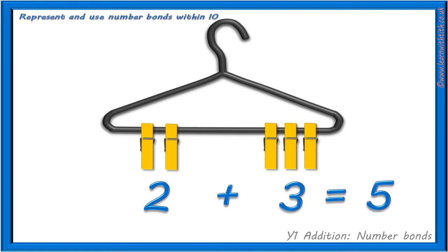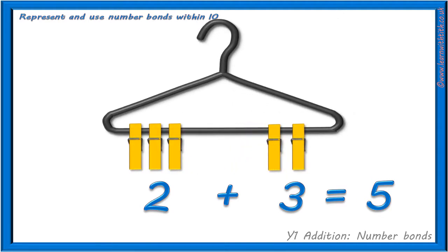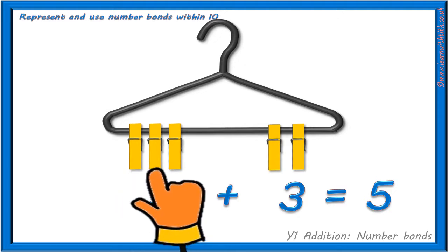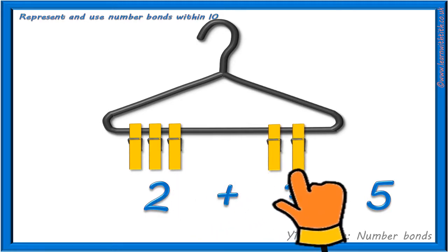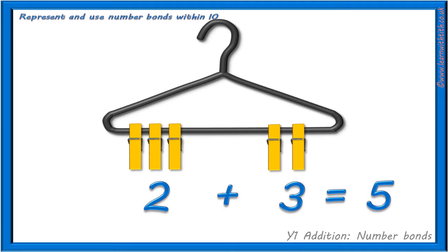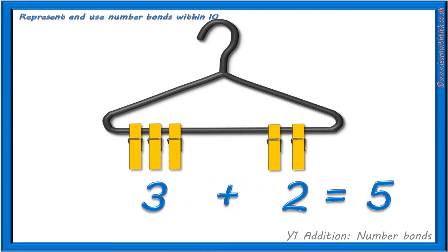And again, if we turn our hanger around, we have 1, 2, 3 pegs on the left and 1, 2 pegs on the right. What sum could we write this time? We could write 3 add 2 equals 5 pegs.